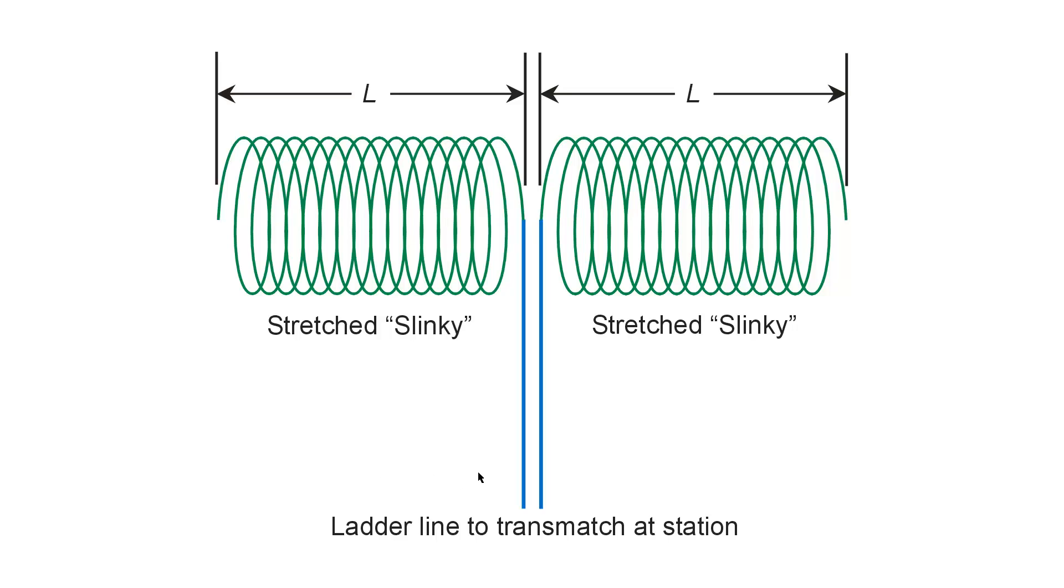the matchbox antennas on the bands that they would tune, did have truly balanced outputs. But a lot of transmatches have balun coils at the output, and they attempt to get a balanced output by using a balun with a high SWR. That is a no-no.